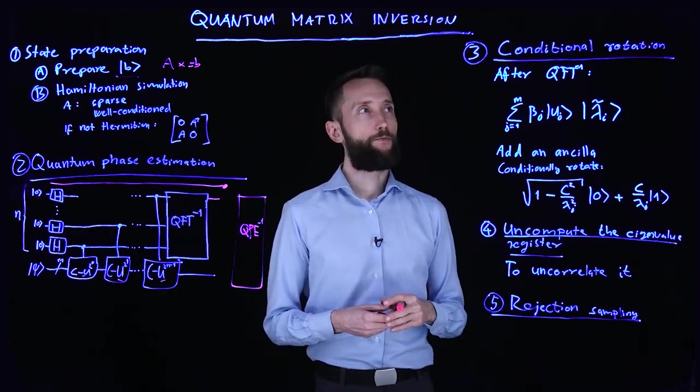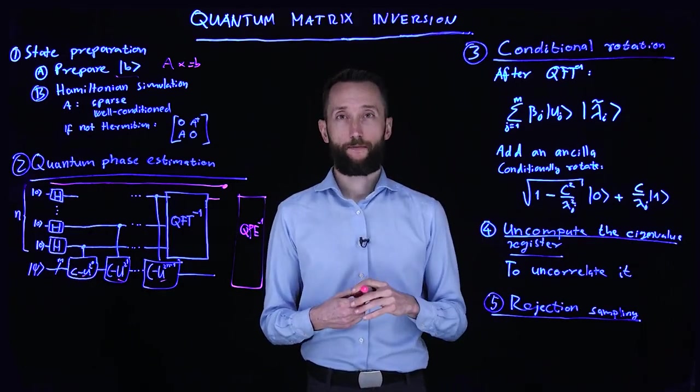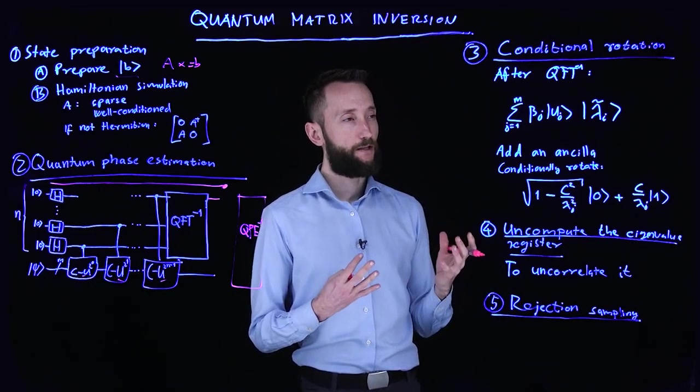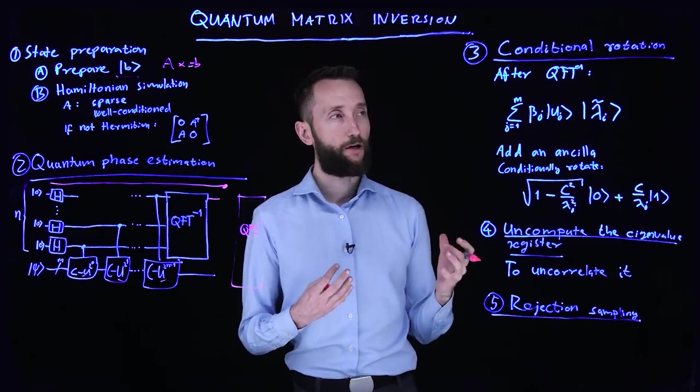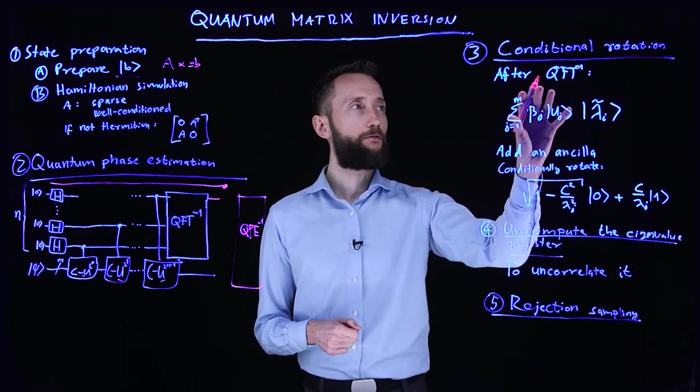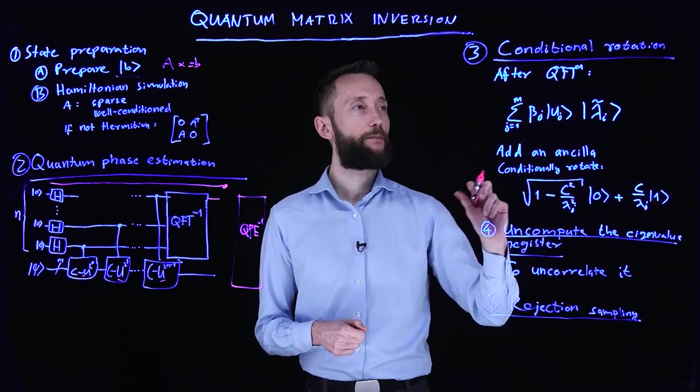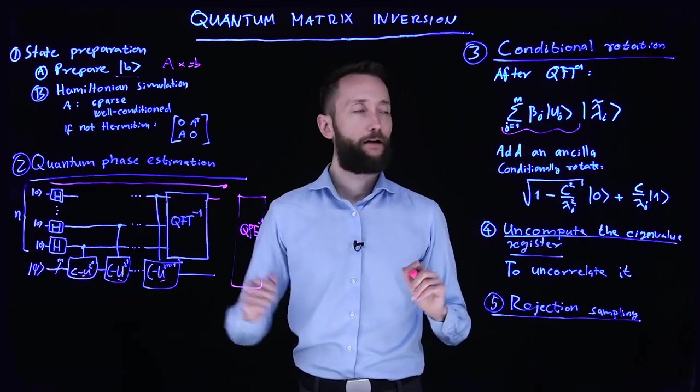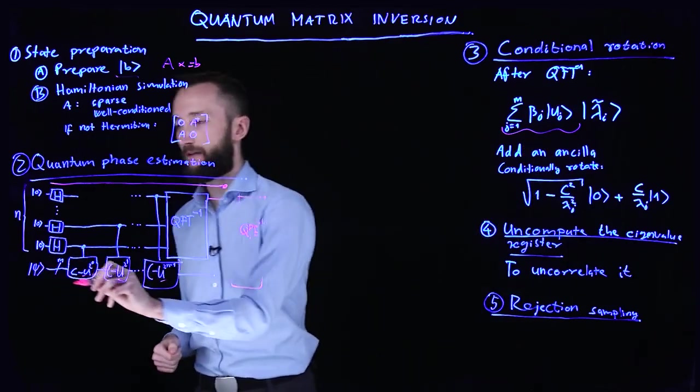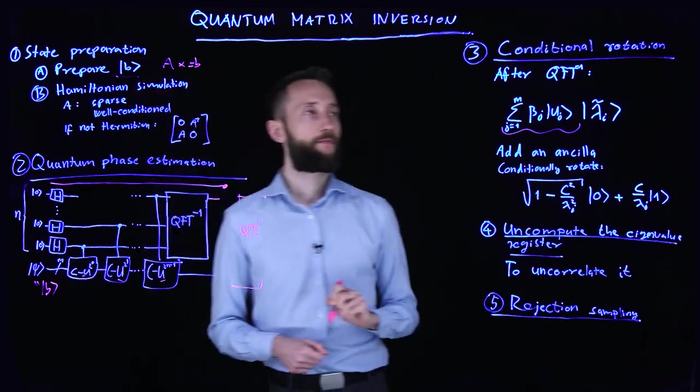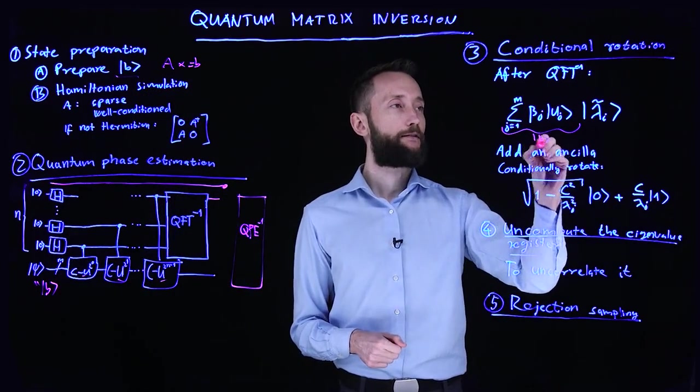The next step is to do a conditional rotation. And this is perhaps the most difficult step in understanding how it works. So we added one ancilla. So after the inverse quantum Fourier transformation, on the main register where the B state was. So now this psi is actually B. This is again just the B vector.